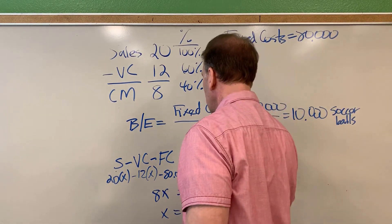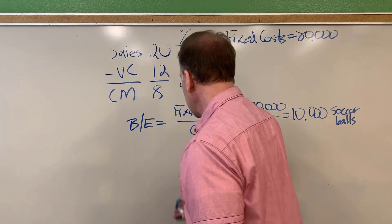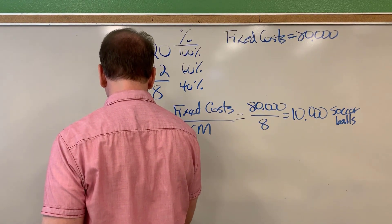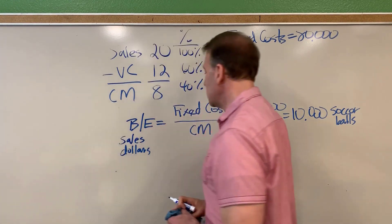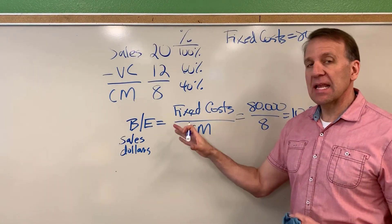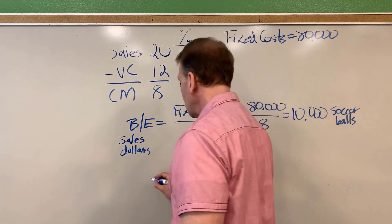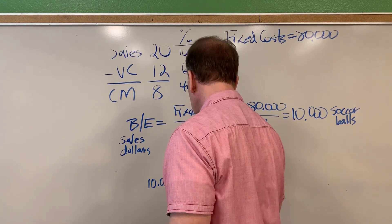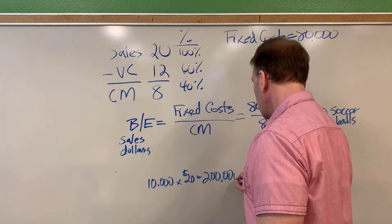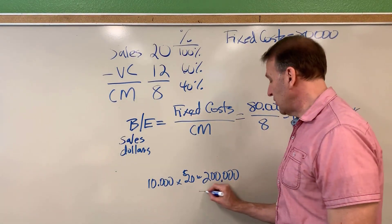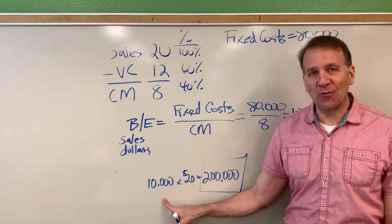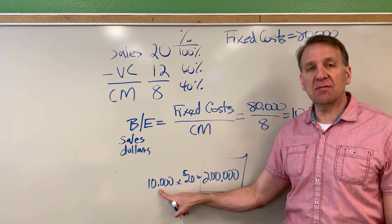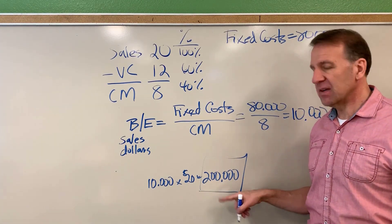Now let's look at break even sales dollars instead of break even units. Remember, we sold 10,000 soccer balls times $20 per soccer ball, so the break even sales dollars is $200,000. This is the shortcut, the really easy way to do it. If you already have the break even in units, just multiply it by the sales amount. We're selling each of these soccer balls for $20, which gets you the break even in sales dollars.